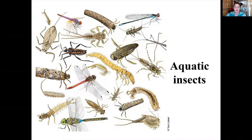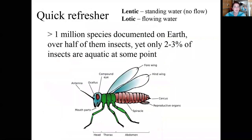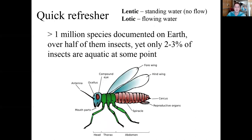Hi everyone, today I'm going to talk about aquatic insects, which is one of my favorite parts of freshwater ecology. There's such a huge diversity of life that most people don't ever encounter, even if you're walking through a stream. A quick refresher: lotic and lentic refer to different types of aquatic ecosystems. Lentic systems have standing water including ponds and lakes, whereas lotic systems have flowing water including streams and rivers.